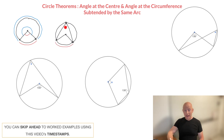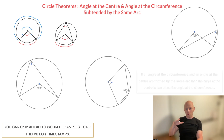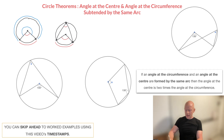Now that we have our angle at the circumference and we know which arc is subtending it, we need to ask ourselves which angle at the center is being formed by the same arc. We can tell right away that the angle at the center being formed by this arc is this one right here. And so what this circle theorem tells us is: if an angle at the circumference and an angle at the center are formed or subtended by the same arc, then the angle at the center is two times bigger than the angle at the circumference.